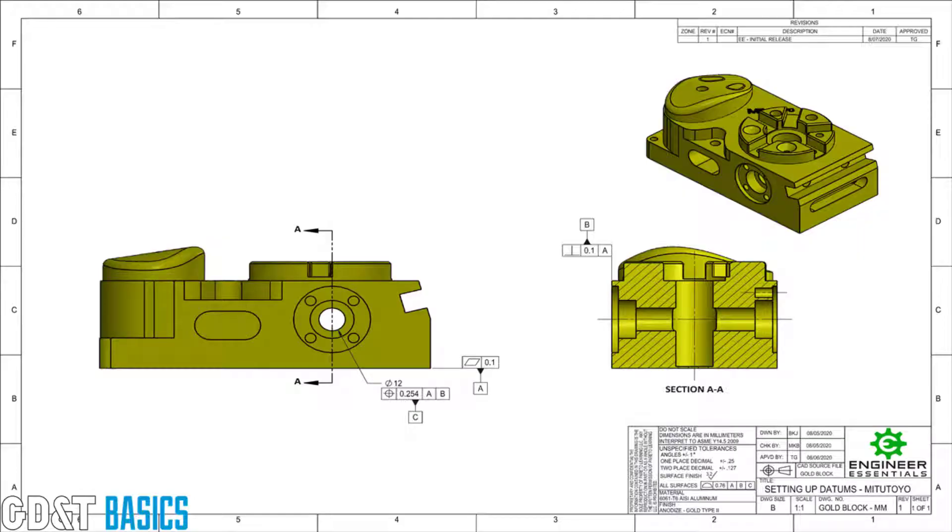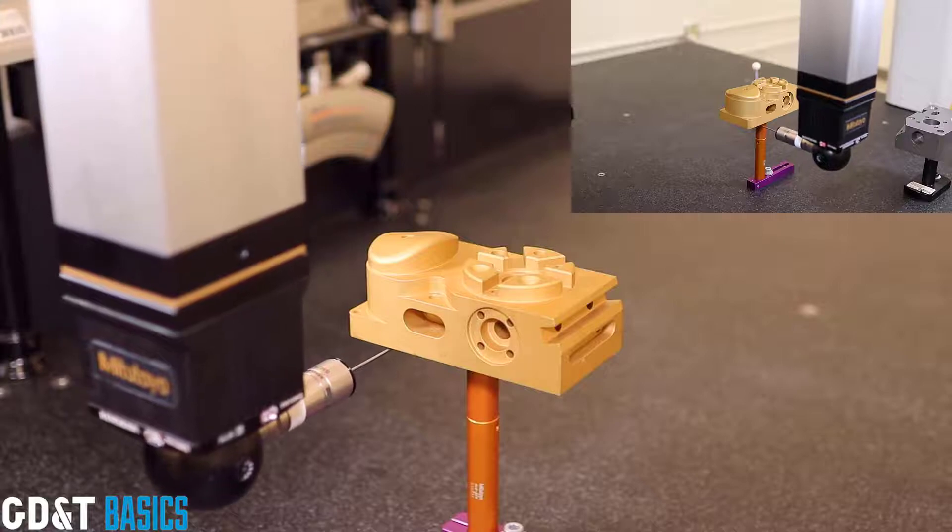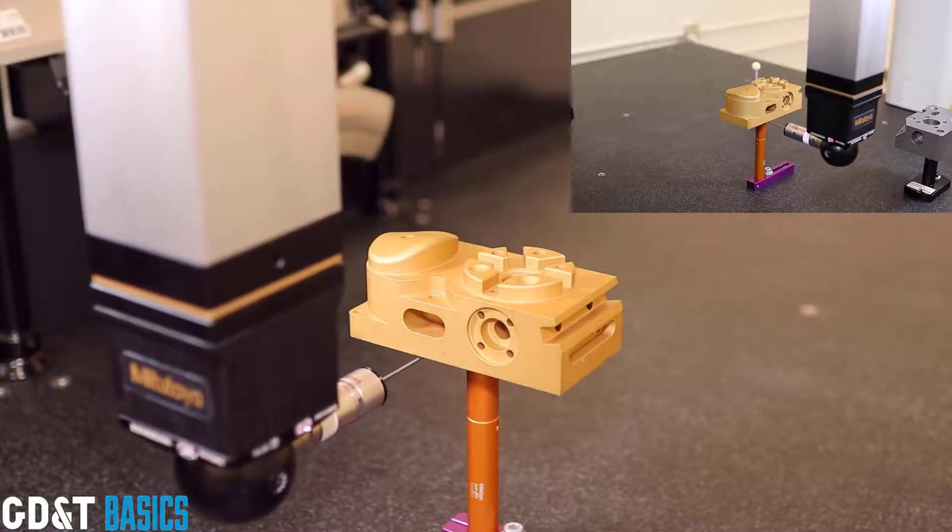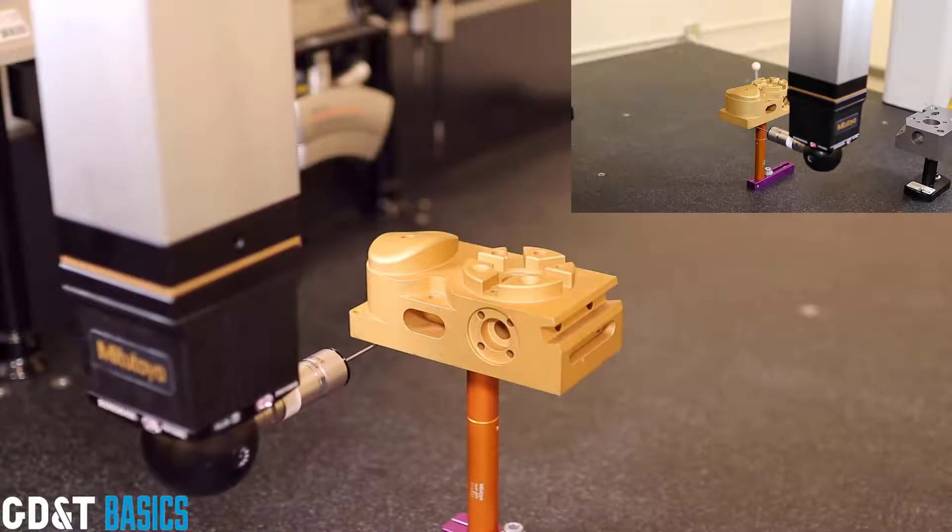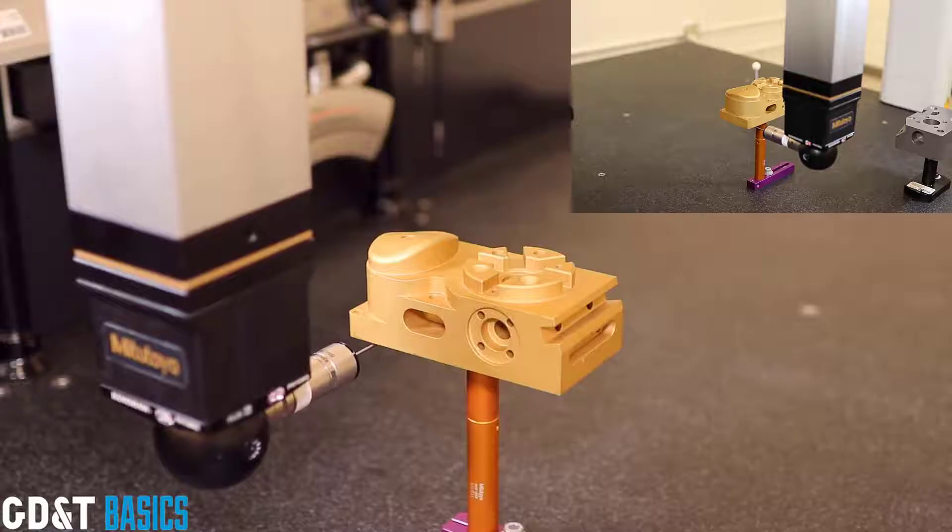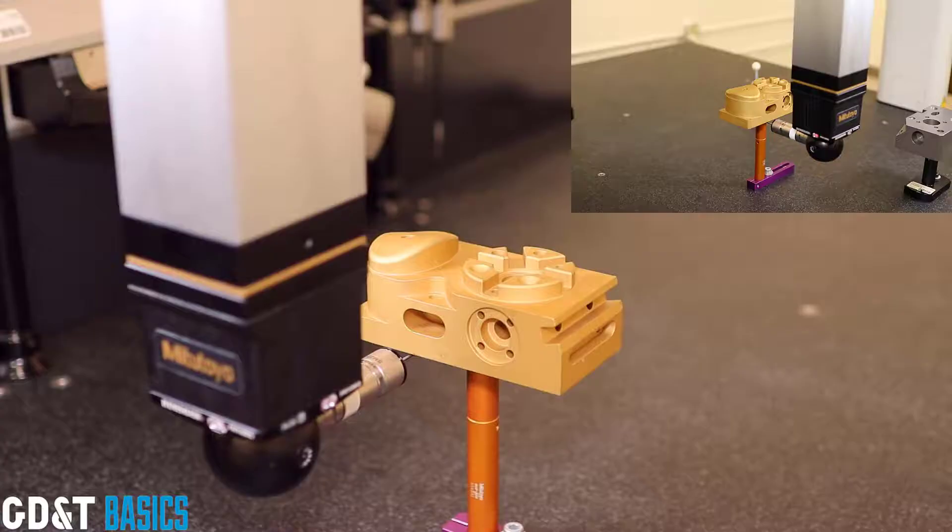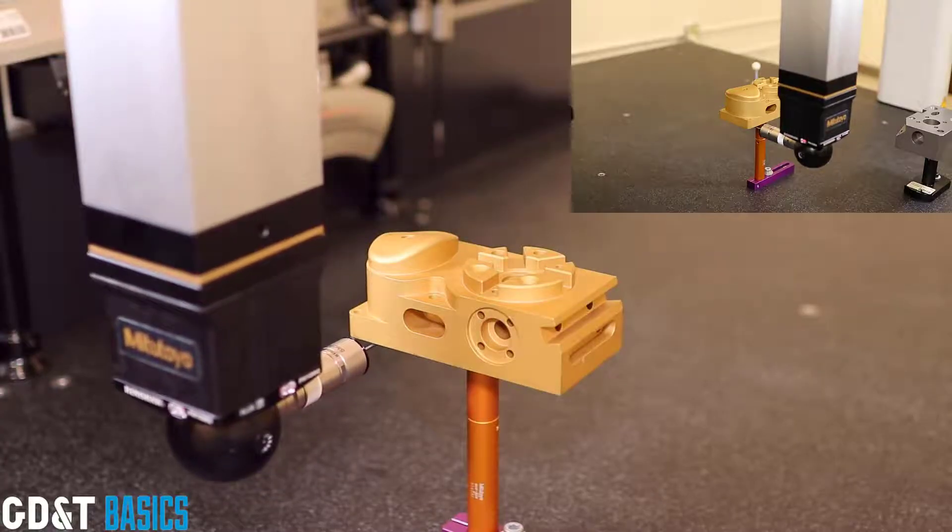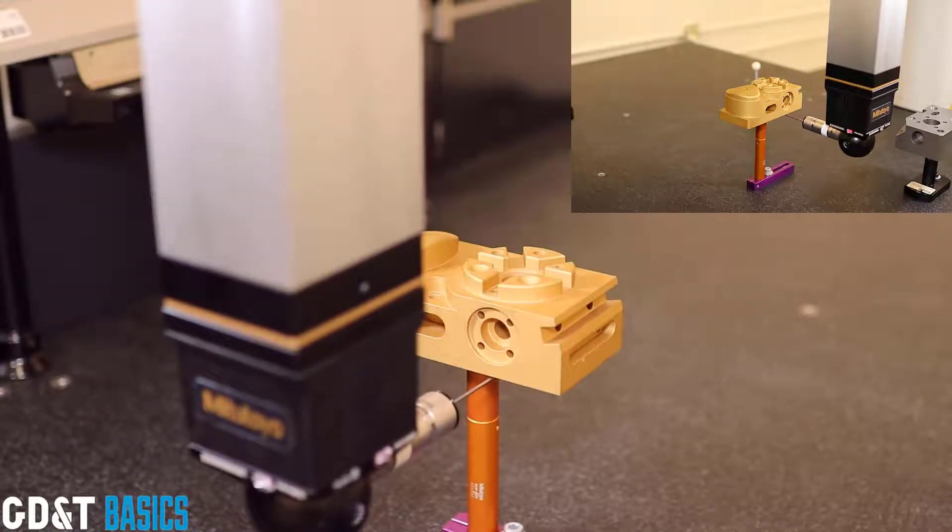Okay, let's move over to the CMM now and watch Javier run the inspection process for flatness on datum feature A. He already has the head rotated so that the probe can reach under the part. He starts probing a bunch of points along X, about halfway across the part, and then moves in a certain distance in Y. The intent here is to capture a large sampling of points, and the number of points required will be determined by him. The ASME Y14.5 standard does not dictate in any way the number of points to take for this measurement or any other measurements. They leave that up to experienced individuals like Javier.